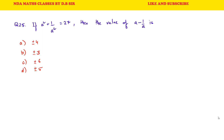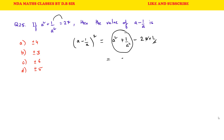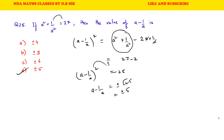If a² + 1/a² equals 27, then find the value of a − 1/a. We use the formula: (a − 1/a)² = a² + 1/a² − 2 × a × (1/a). Since a × (1/a) cancels to 1, we get (a − 1/a)² = 27 − 2 = 25. Taking square root, a − 1/a = ±√25 = ±5. This is the correct answer.